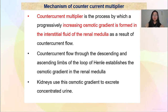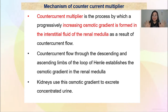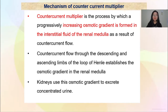Proses counter current multiplier ini adalah proses di mana osmotic gradient akan terus dihasilkan antara filtrate nephron dengan interstitial fluid of the renal medulla — bila kamu explain, jangan guna 'medulla' saja, mesti cakap 'renal medulla'. This counter current flow through the descending and ascending limbs of the loop of Henle establishes the osmotic gradient in the renal medulla, and kidneys use this osmotic gradient to excrete concentrated urine. Counter current flow yang menyebabkan ada perbezaan osmotic gradient — baru air boleh mengalir keluar, barulah kencing kita boleh jadi pekat.